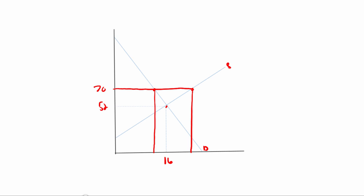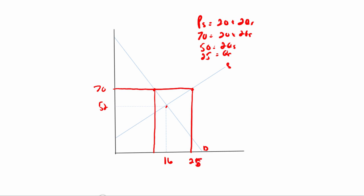We go back to the supply curve: PS equals 20 plus 2QS. We know the world price is $70, so we plug in 70 equals 20 plus 2QS. Bringing the 20 over gives 50 equals 2QS, so QS equals 25. I'll mark 25 on the graph.